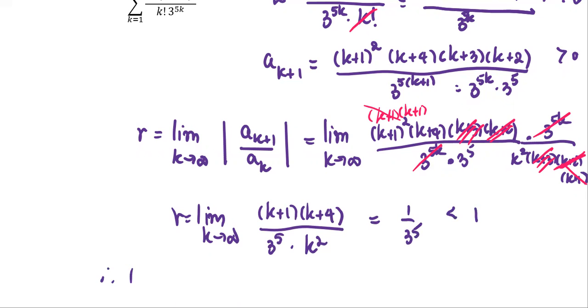The limit value approaches 1 over 3 to the fifth, which is less than 1. Therefore, we can say the series converges by the ratio test.